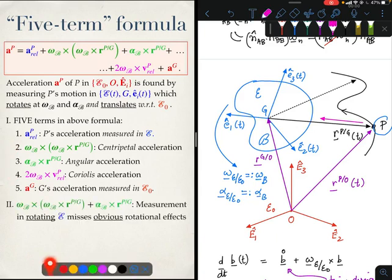We begin with the two terms ω × (ω × r) + α × r. As I will now show you, these two terms reflect the error made in measuring the acceleration of P in a rotating frame and correct for the obviously missed rotational effects.